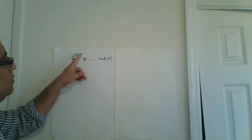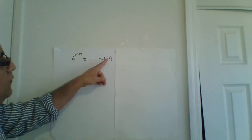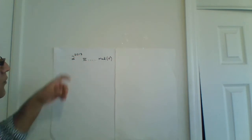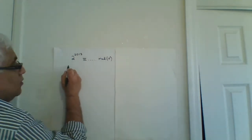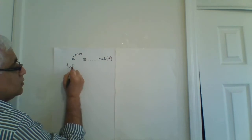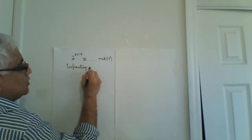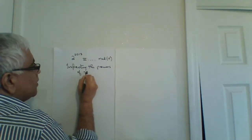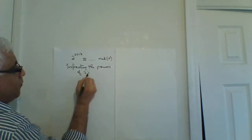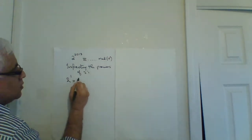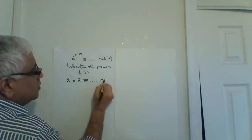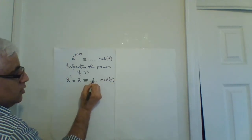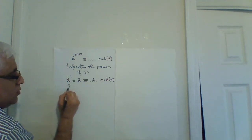We're doing this question: 2 to the power 2013 mod 15 — we need to find the remainder. It is a very large power, so what we do in this congruency method is we inspect the values of powers of 2. This is basically our first step: inspecting the powers of 2. So 2 to the power 1 is 2, congruent to 2 mod 15 — our remainder will be 2.